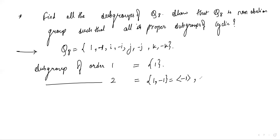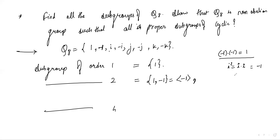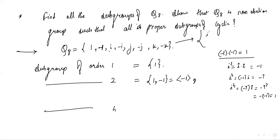We need to find all elements which have order 2. The element -1 has order 2 because (-1)×(-1) = 1. The element i has order 4: i² = -1, i³ = -i, and i⁴ = (-1)×(-1) = 1.